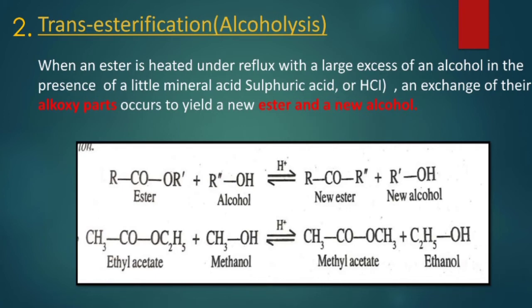The second chemical reaction is transesterification, also called alcoholysis. When an ester is heated under reflux with a large excess of an alcohol in the presence of a mineral acid such as H₂SO₄ or HCl, an exchange of the alkoxide part occurs to yield a new ester and a new alcohol. For example, ethyl acetate reacts with methanol in acidic medium to reversibly give methyl acetate and ethanol.